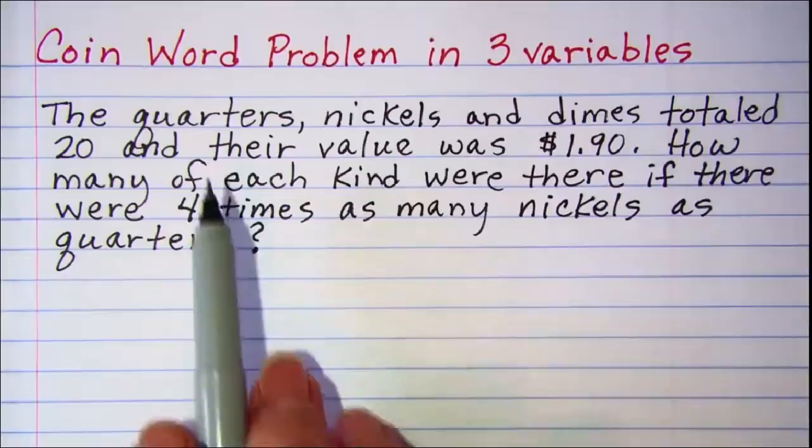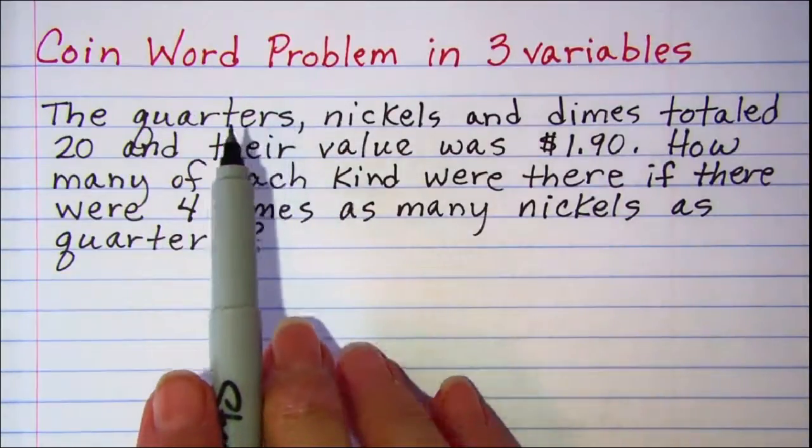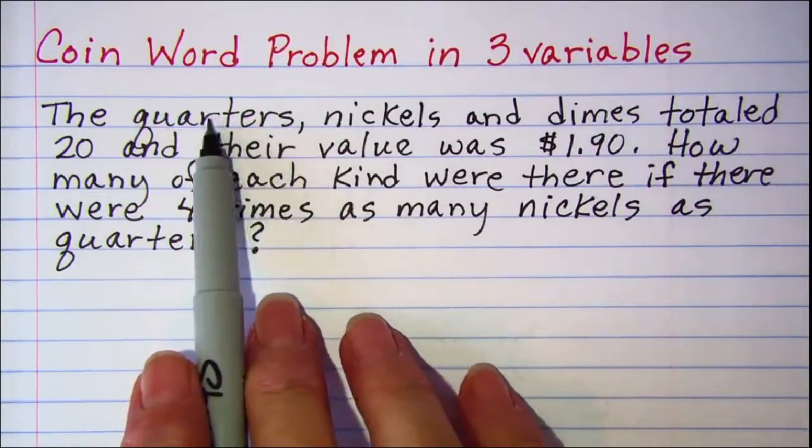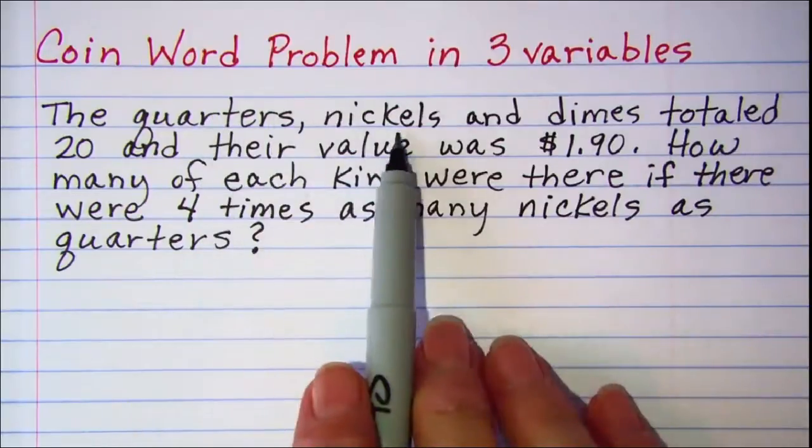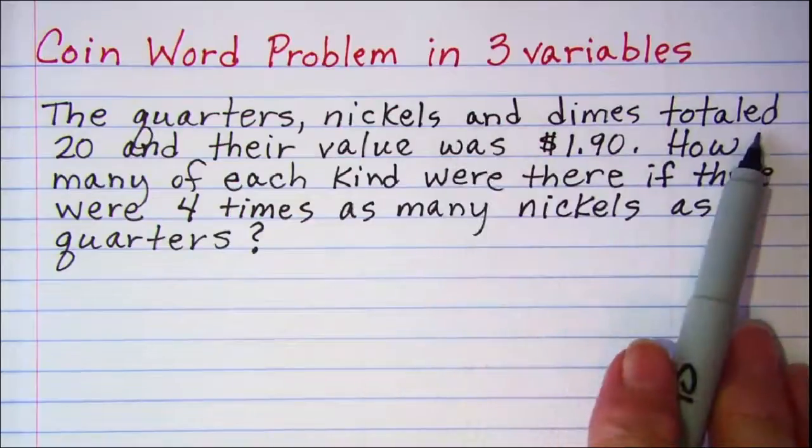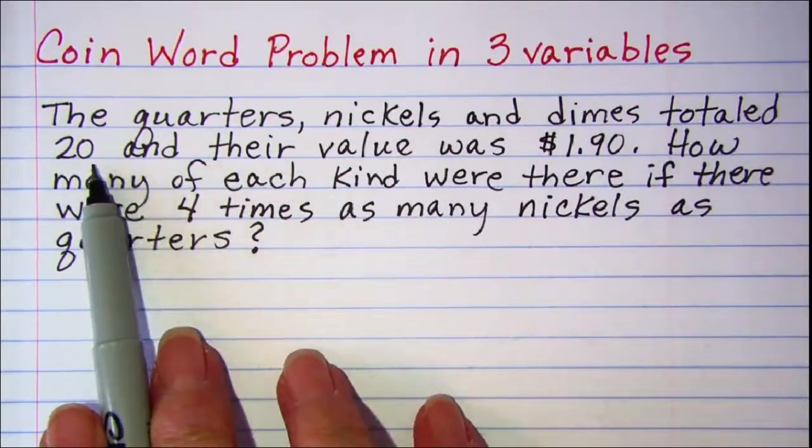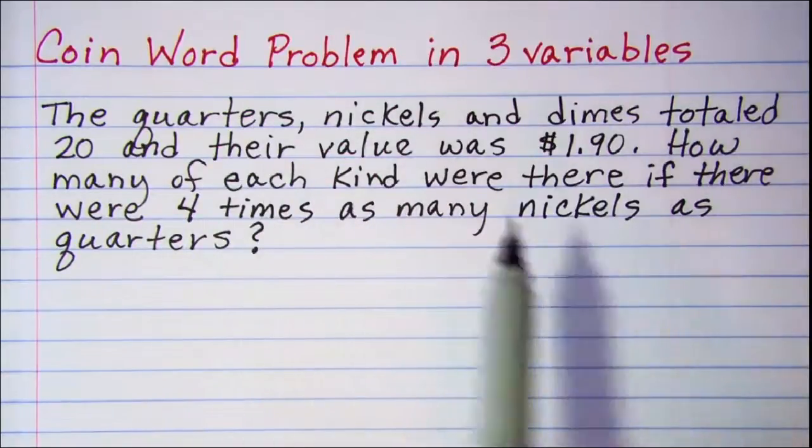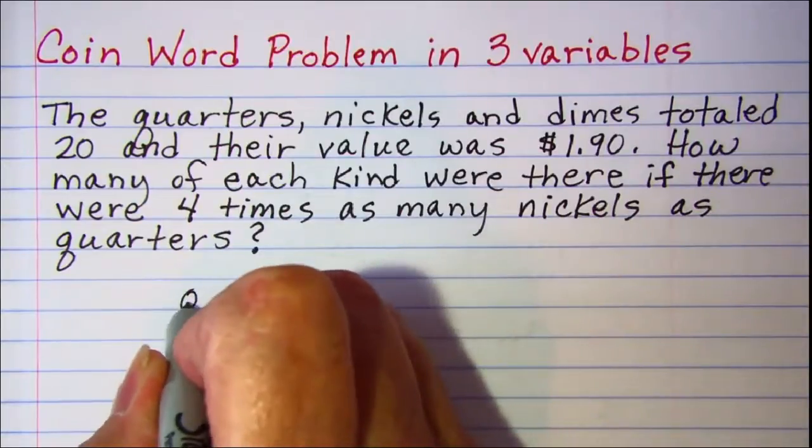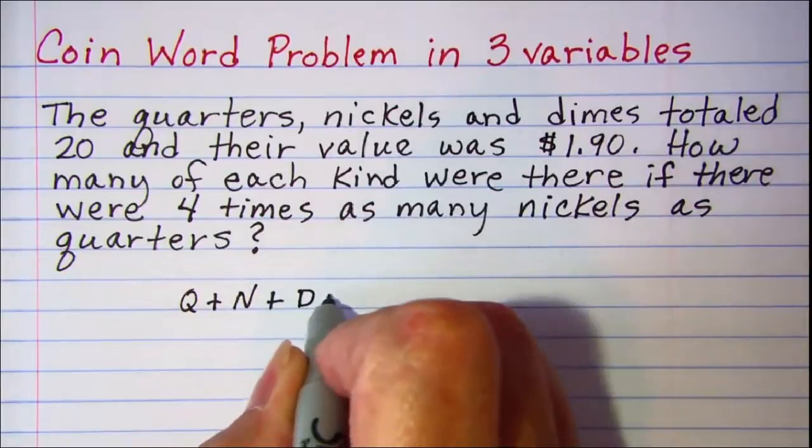When you work coin word problems you'll have two types of equations. One of them deals with the quantity of coin and we'll use Q for quarters, N for nickels, and D for dimes. So this first sentence, since the quarters, nickels, and dimes totaled 20, we can use the quantity totaling 20. So we'll have Q plus N plus D equals 20.